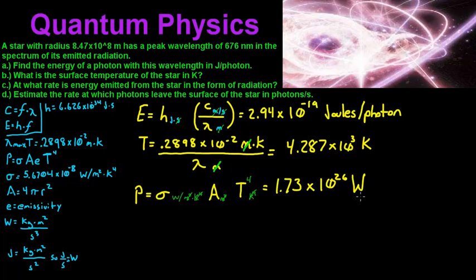We need to convert from watts to joules per second. Watts equals kilograms times meters squared divided by seconds cubed, and a joule is almost the same except with seconds squared instead of seconds cubed. So watts equals joules divided by seconds — we just replace watts with joules divided by seconds.